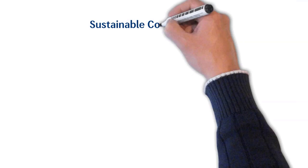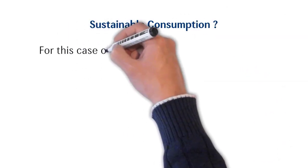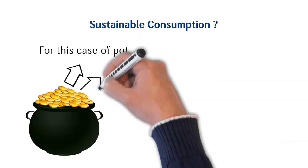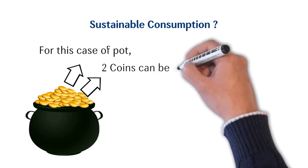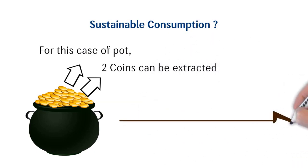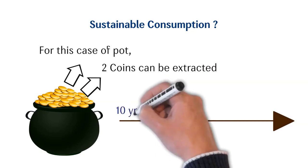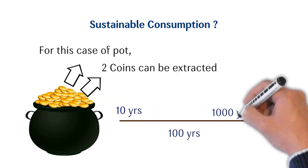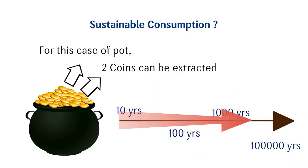But in this case of the magical pot, sustainability is a system that maintains the amount of extraction to two coins, which can be extracted up to infinite time without affecting the ability of that pot to give us two coins to sustain the living of future generations.